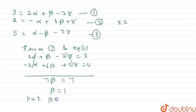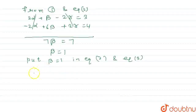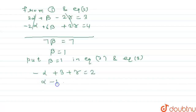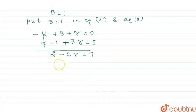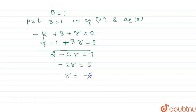Now, substituting beta = 1 into equation 2 and equation 3. From equation 2: minus alpha + 3 + gamma = 2. From equation 3: alpha minus 1 minus 3gamma = 5. Adding these two equations, minus alpha and plus alpha cancel, giving minus 2gamma = 7. Simplifying, minus 2gamma = 5, so gamma = minus 5 by 2.